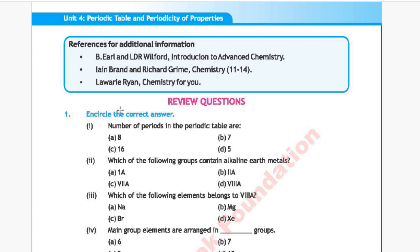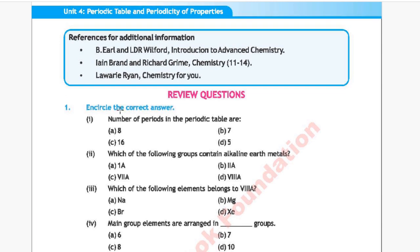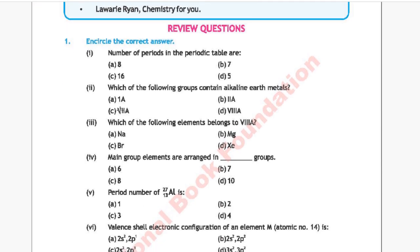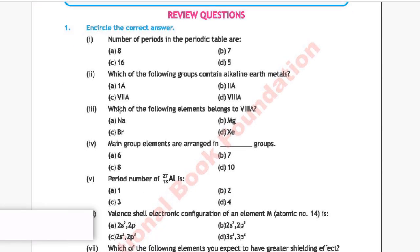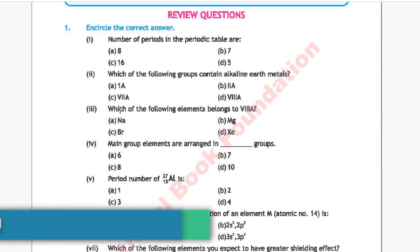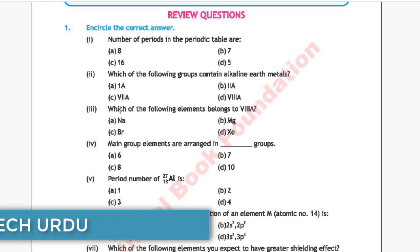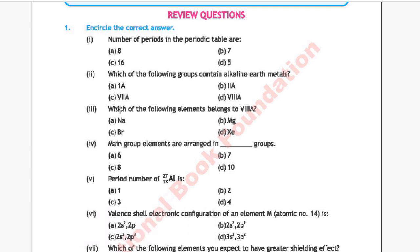Next chapter is Periodic Table and Periodicity of Properties. Question 1: Number of periods in the periodic table are — Option A: 8, Option B: 7, Option C: 16, Option D: 5. The correct answer is Option B, 7.